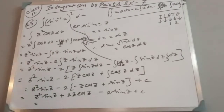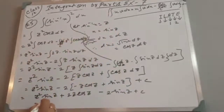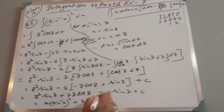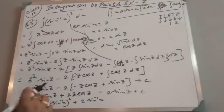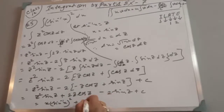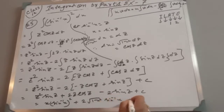Expanding: z² sin z + 2z cos z − 2 sin z + C. Now substitute back in terms of x: z = sin⁻¹x, sin z = x, cos z = √(1 - x²). Final answer: x(sin⁻¹x)² + 2√(1 - x²) · sin⁻¹x − 2x + C.